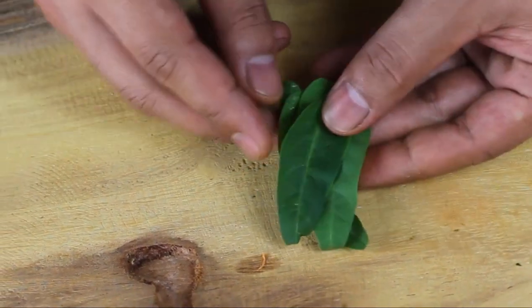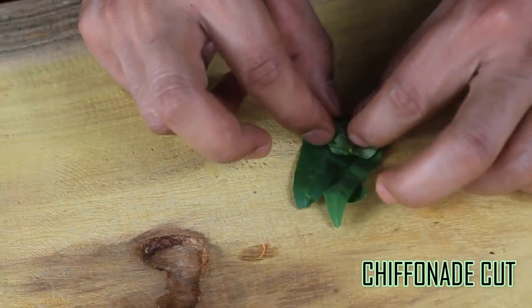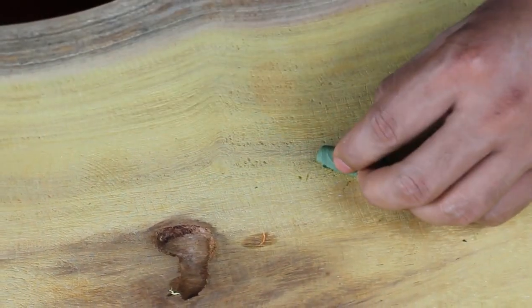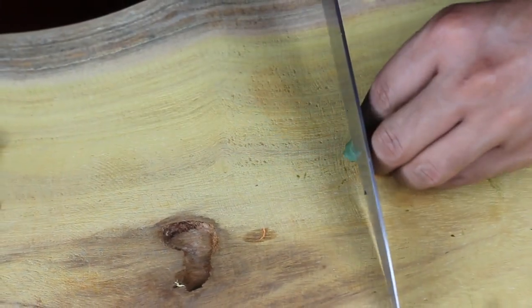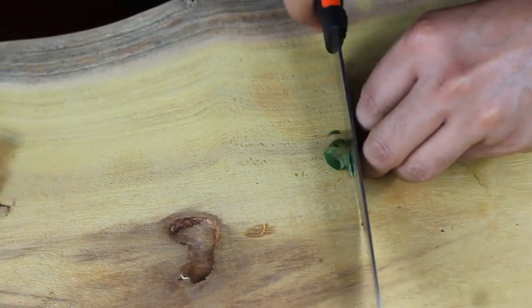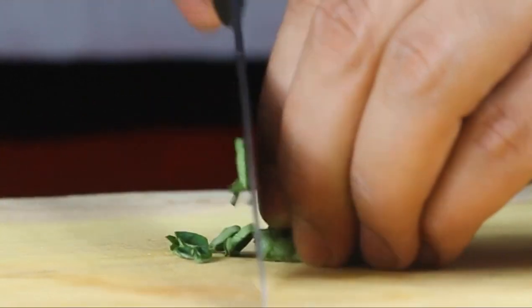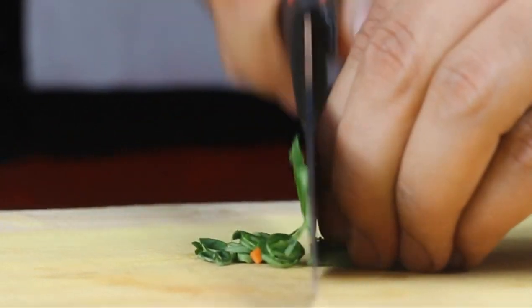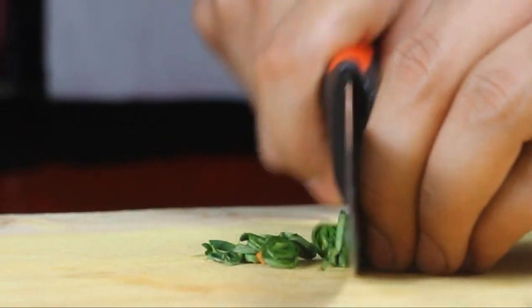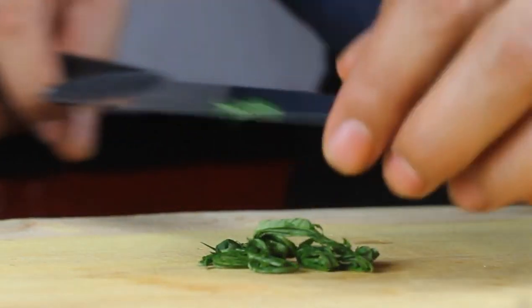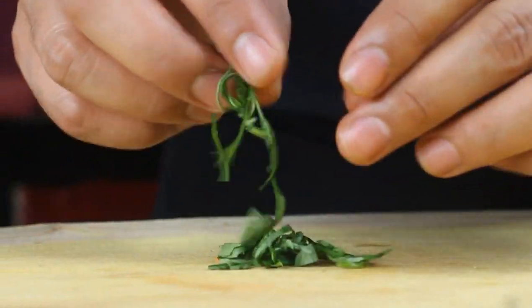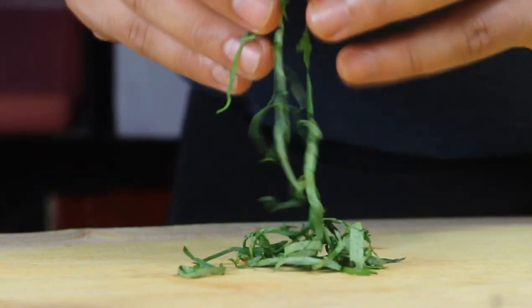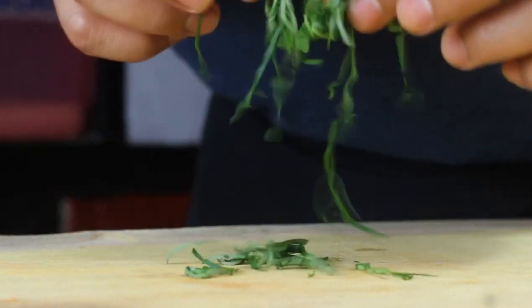This is the chiffonade cut. The chiffonade method is best for cutting herbs into long ribbons. Stack fresh basil or mint leaves, roll them up tight and cut across, hamburger style. And voila! Look at those gorgeous cuts. This technique also works well for leafy greens like spinach, collards, and kale.